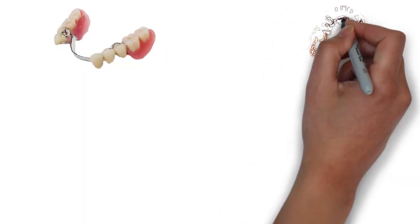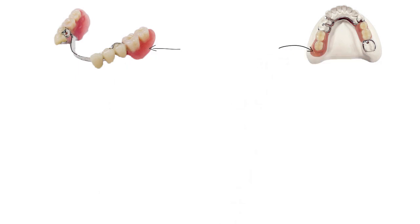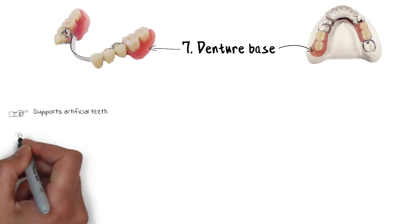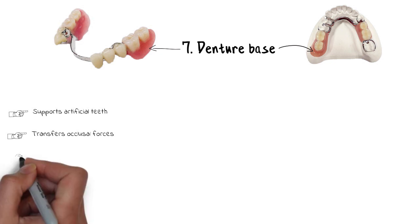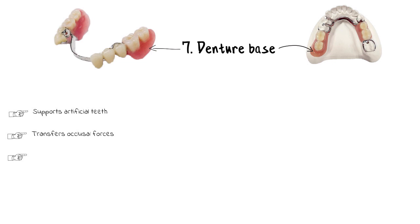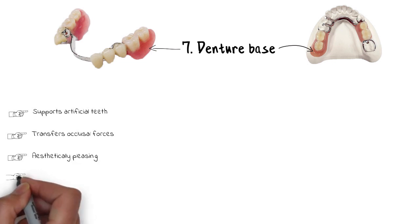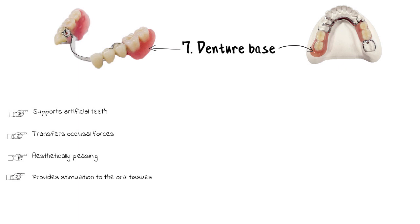The next component is the denture base. The denture base essentially supports the artificial teeth and holds them in place. It also receives the occlusal forces and transfers them to the supporting oral structures. Other than this, it has an aesthetic function by providing a more natural-looking appearance to the wearer, and it also stimulates the underlying tissues, helping to maintain their form and tone.